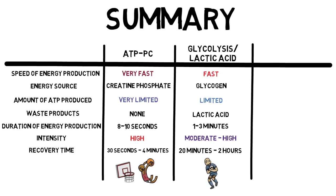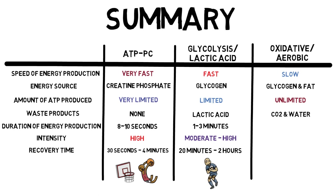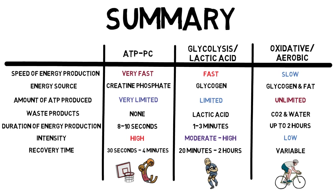The oxidative system is slow to produce energy. The energy sources are glycogen and fat. However, it has an unlimited amount of ATP that can be produced. The waste products are carbon dioxide and water. You can get up to 2 hours worth of energy production, but the intensity will be low. The recovery time is completely variable, depending on what you eat and drink as part of your recovery. The oxidative system's ability to produce low intensity work for long periods of time make it the predominant system used for long endurance activities, such as a long distance cycle.